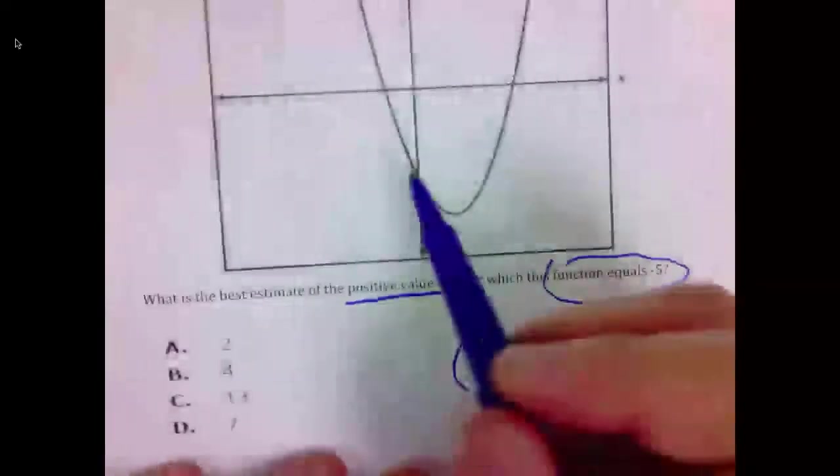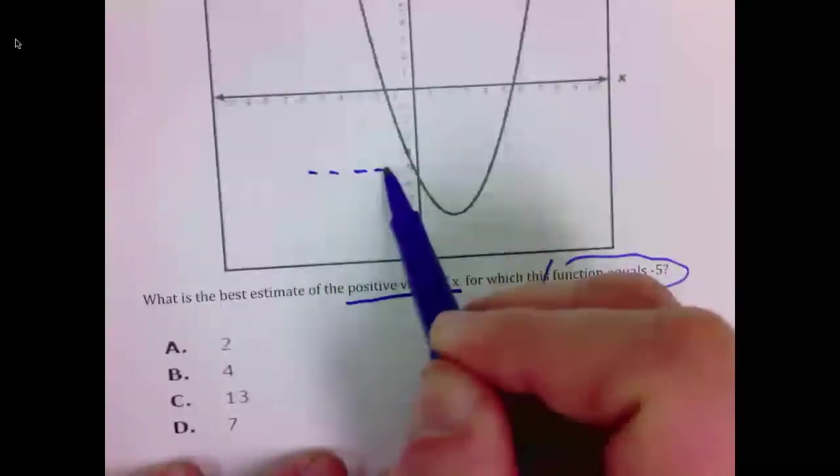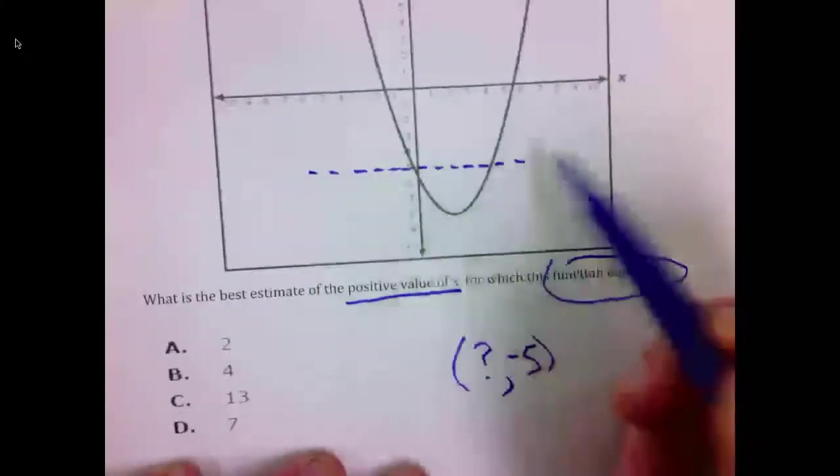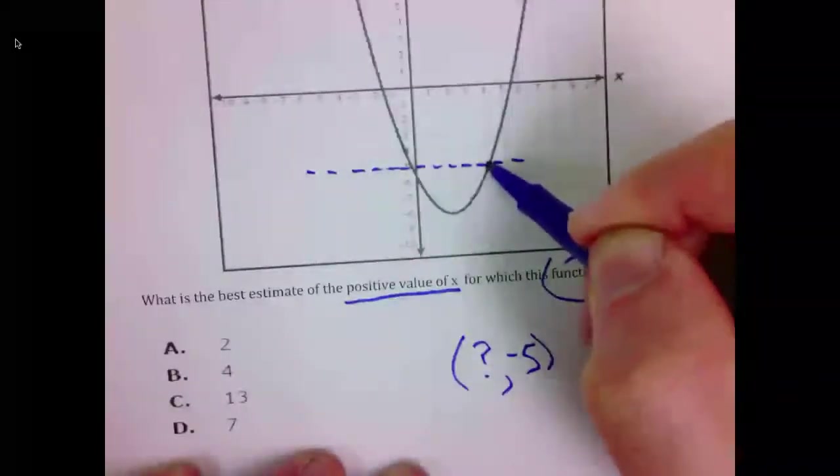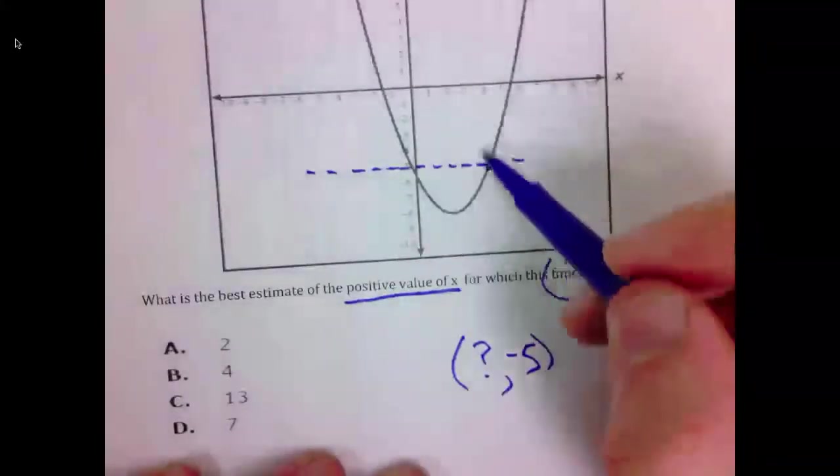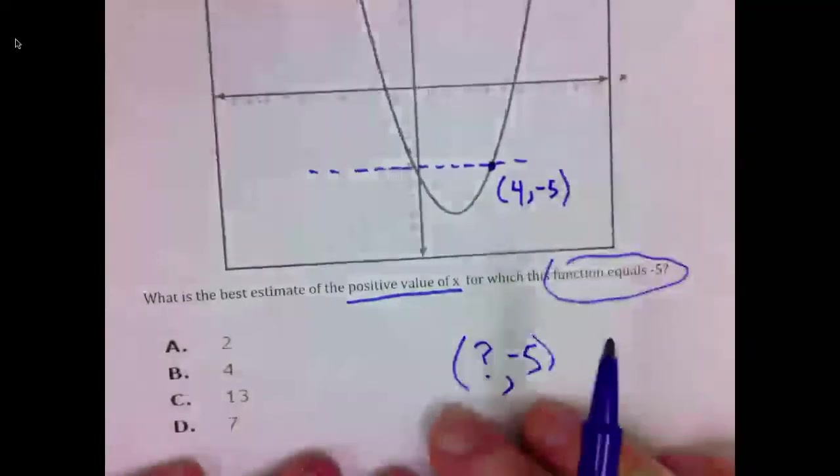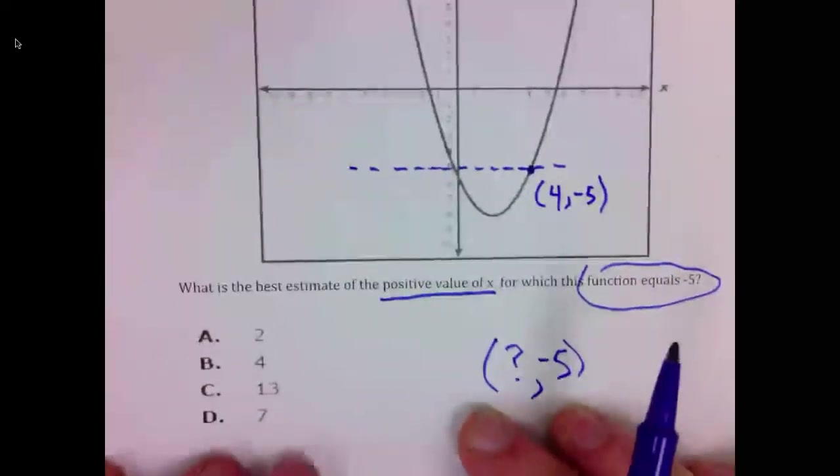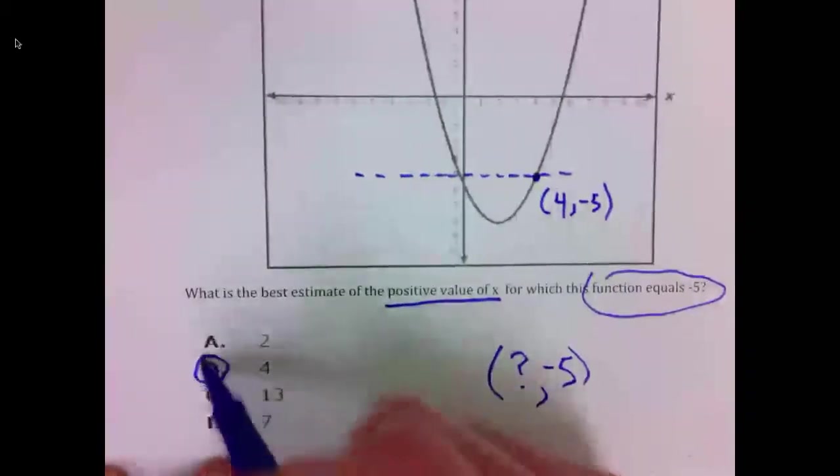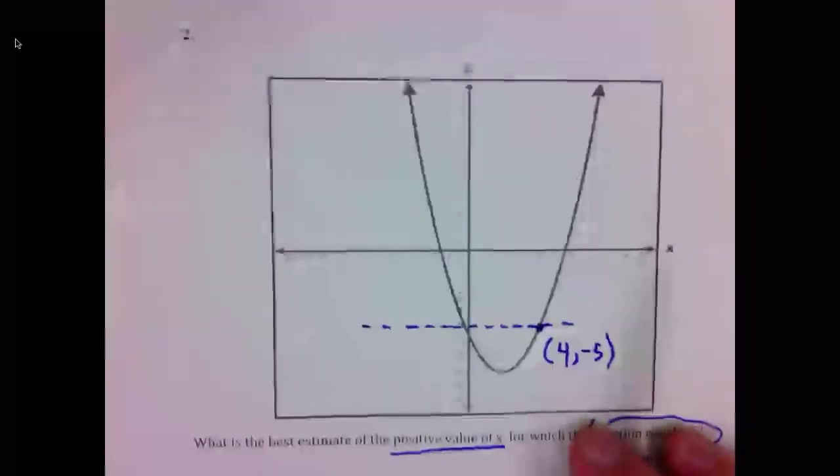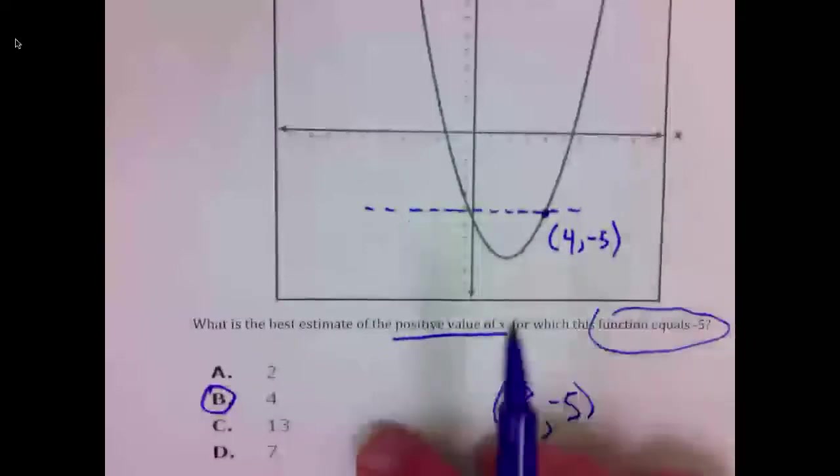So come to Y being negative five. That's right here. And you see that it's approximately there. So it looks like four pairs with negative five. The correct answer on number two is B.